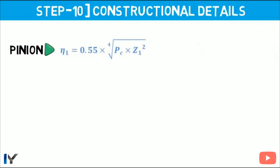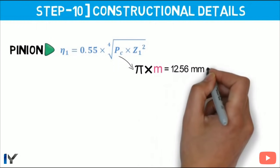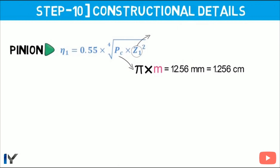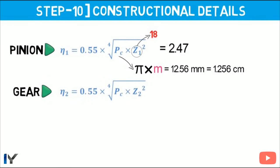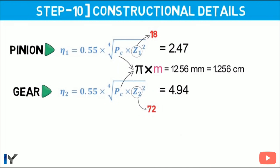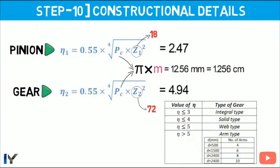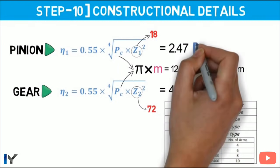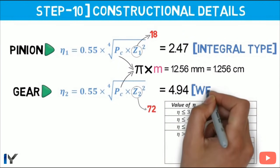Step 10: Constructional details. Calculate N values to determine gear type. For pinion: N1 = 0.55 × (PC × Z1²)^(1/4), where PC = π × m = 12.56 mm = 1.256 cm. N1 = 2.47. For gear: N2 = 0.55 × (PC × Z2²)^(1/4), Z2 = 72, giving N2 = 4.94. Using the classification table: N ≤ 3 → integral type, ≤ 4 → solid, ≤ 5 → web, > 5 → arm type. Therefore pinion is integral type and gear is web type.